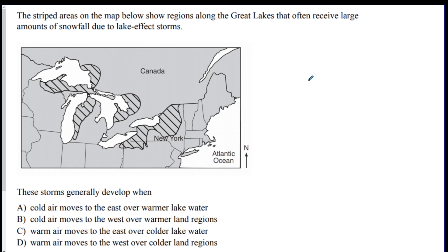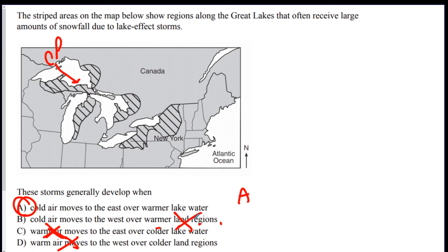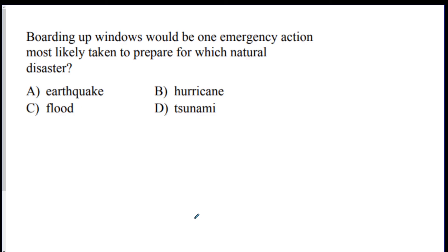The striped areas show lake effect snow — these storms generally develop when what? We said the CP air mass comes from Canada, goes over the lake, and drops snow on the opposite side. So we want cold air moving east over the warmer lake water — that is the good answer. Warm air is not going to bring snow, so that's out. Warmer land is not going to bring snow either. Boarding up windows is what you would do to prepare for a hurricane — answer B.